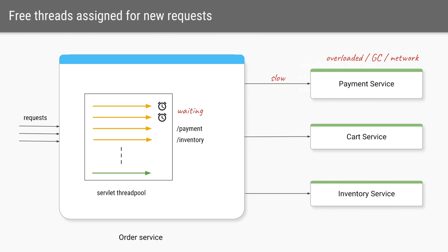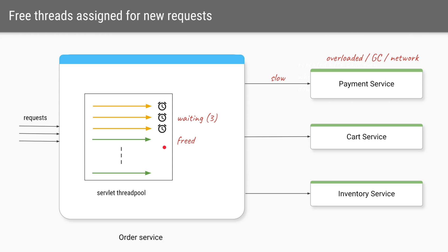When more requests come in — let's say one more payment request and one more inventory request — two other threads will be assigned. Since the payment service is still slow, the third thread will also be waiting for it to send the response, while the thread handling the inventory request is again freed very quickly.